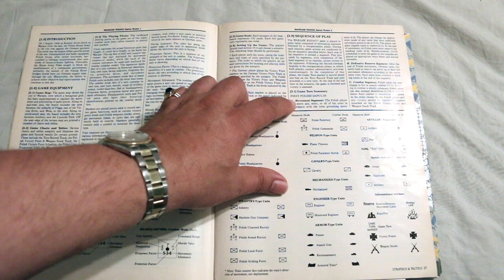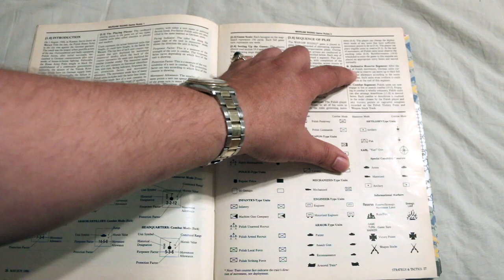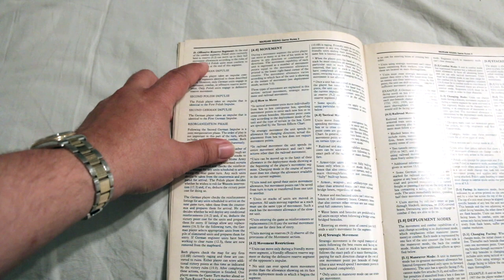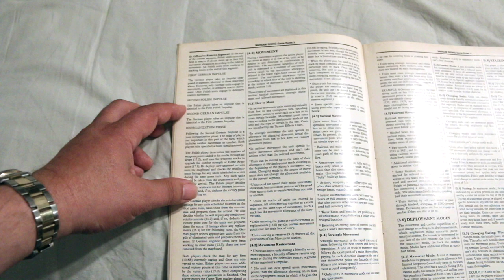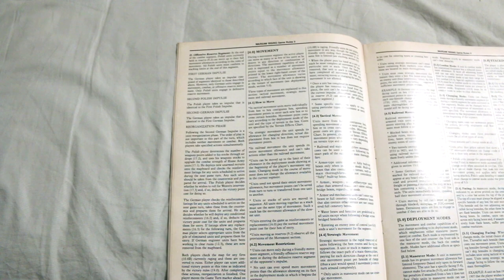Alright, sequence of play. Game turn summary. Looks like this is an impulse game. First Polish impulse is movement, then defensive reserve segment and combat segment. And then there's an offensive reserve segment and then it goes to the first German impulse and then the second Polish impulse, second German impulse and then there's a reorganization phase.